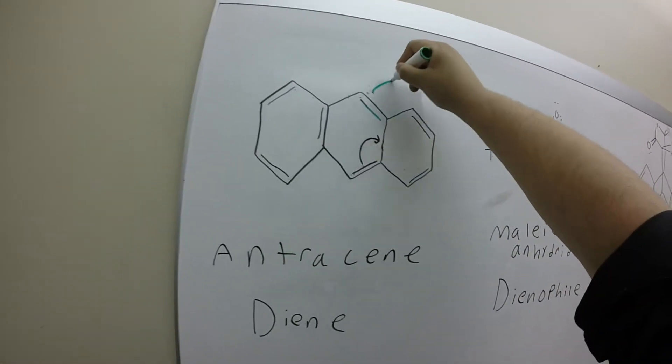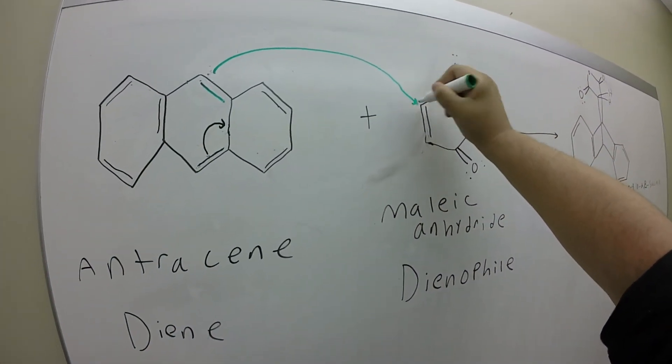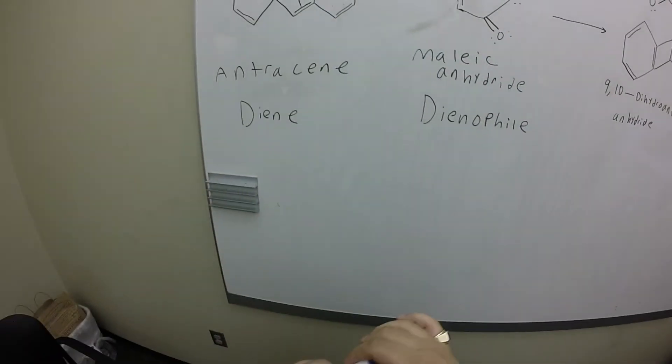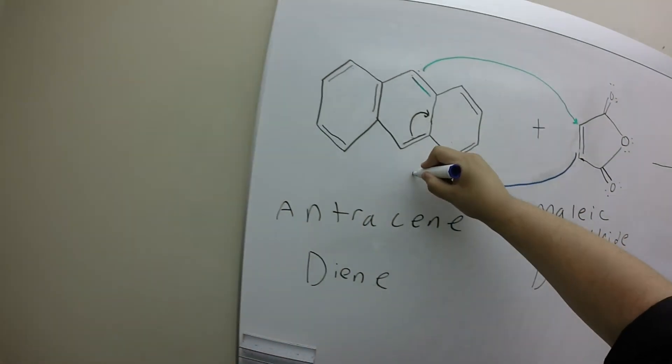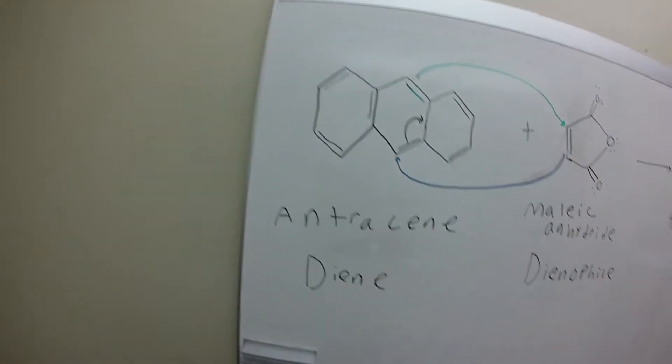This double bond goes into the formation of a single bond with this carbon of the maleic anhydride. And then this double bond goes into the formation of a single bond with this carbon on the anthracene.